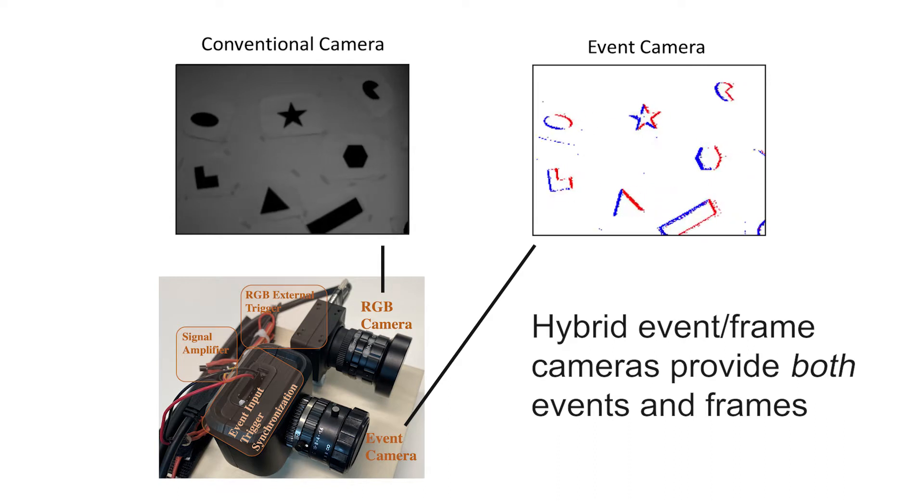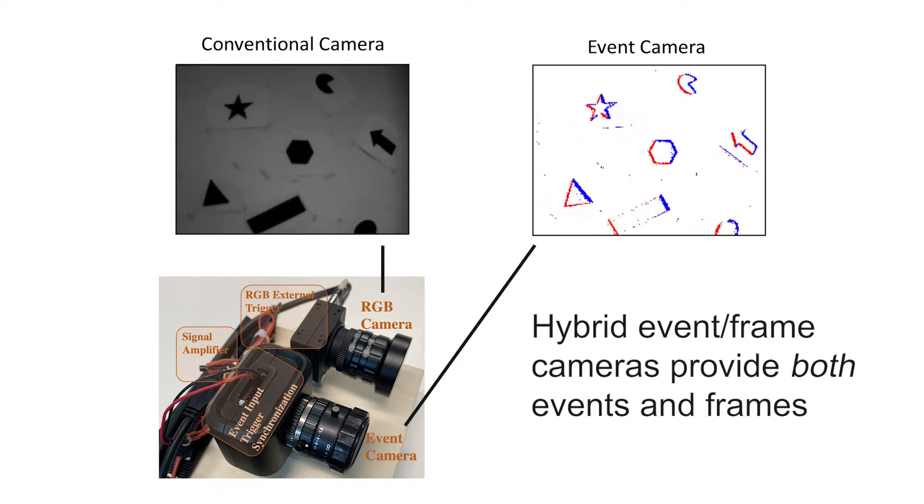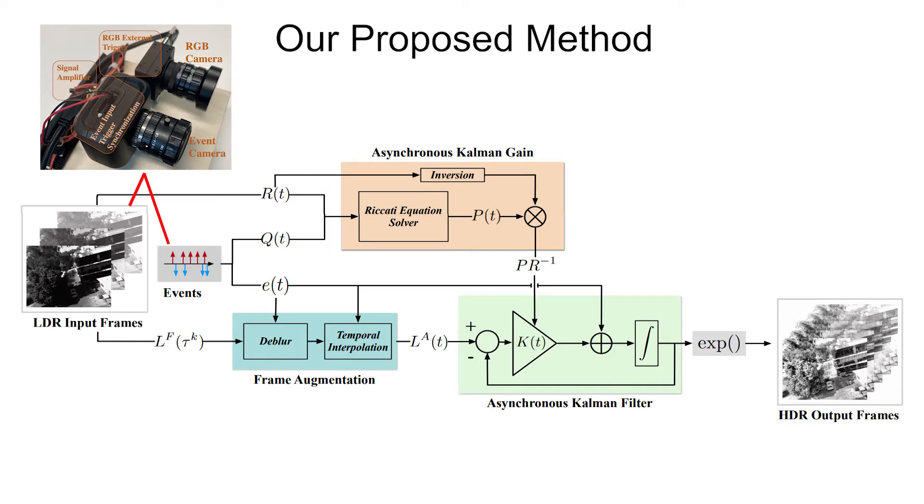Hybrid event frame cameras provide parallel streams of both events and image frames. We propose to combine frames and events from a hybrid camera to recover high dynamic range, high temporal resolution, sharp video footage.